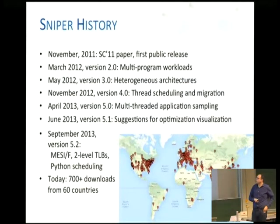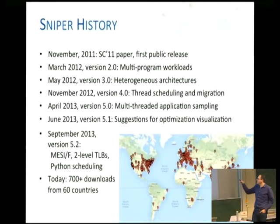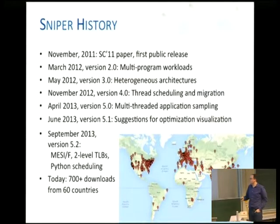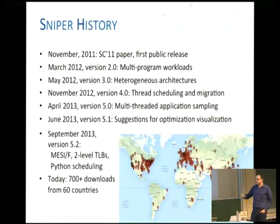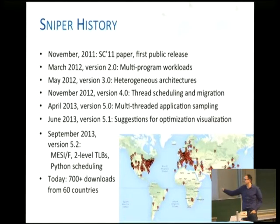Here's a little bit of history of Sniper. We released our first version in 2011 and have made many revisions since then, adding lots of features. We've got around 700-plus downloads from researchers — some people are searching for shoot-em-up games, but we just discard those from the download count.